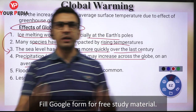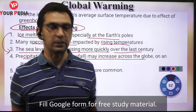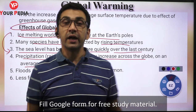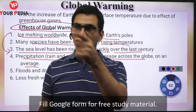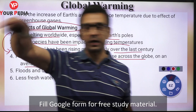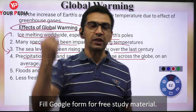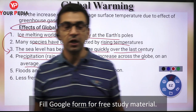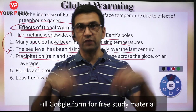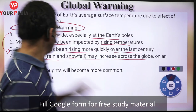Precipitation - rainfall and snowfall - may increase across the globe on an average. When overall temperature increases, cloud formation and rainfall are affected. In India, monsoon depends on how much the interior - particularly northwestern India like Rajasthan and Punjab - gets heated up. If that region gets heated, low pressure is generated and winds from the ocean are drawn in. If temperature goes further up, rainfall may increase and weather patterns will be completely disturbed.